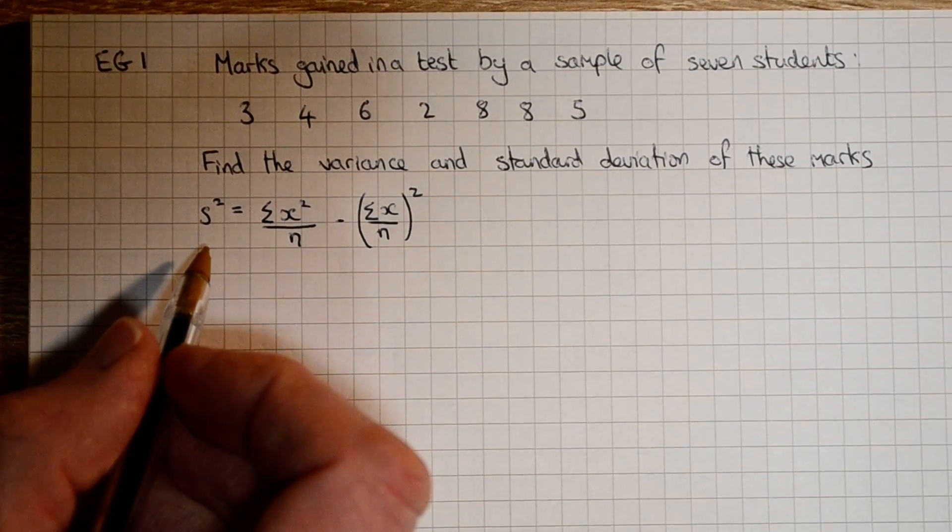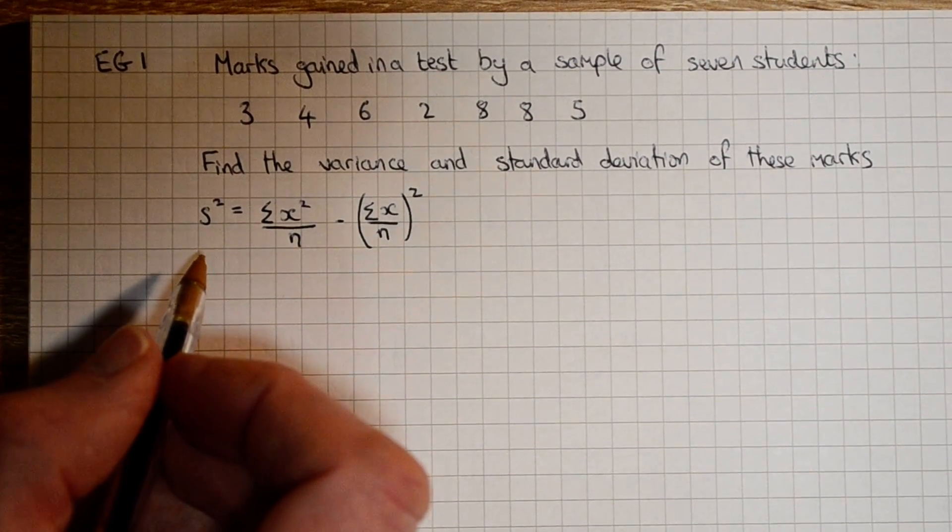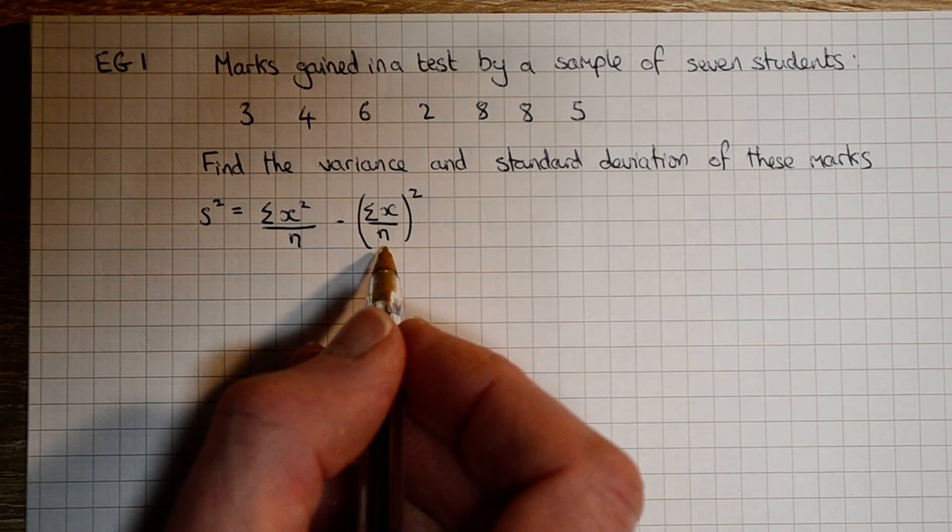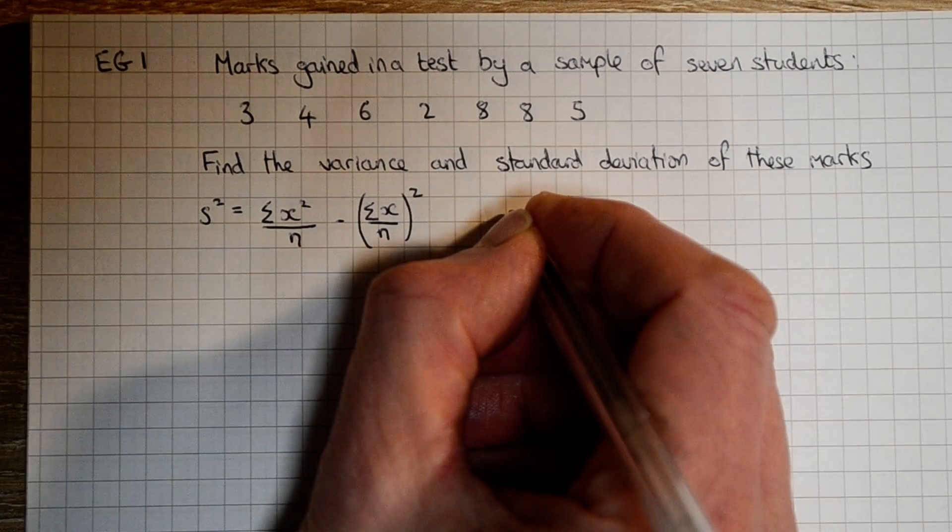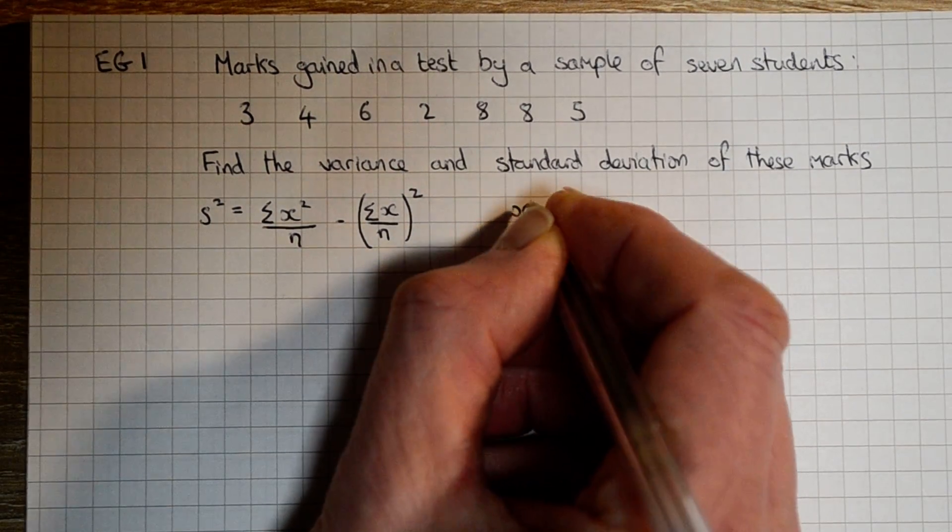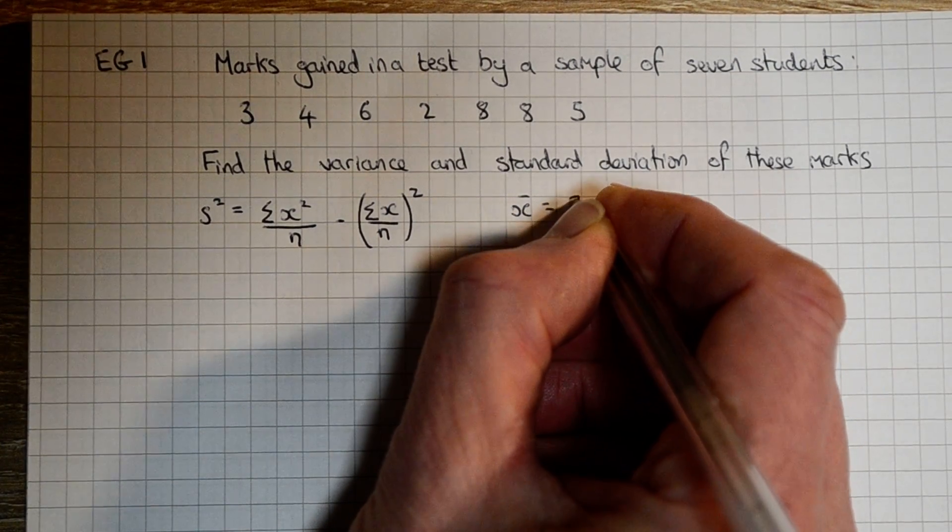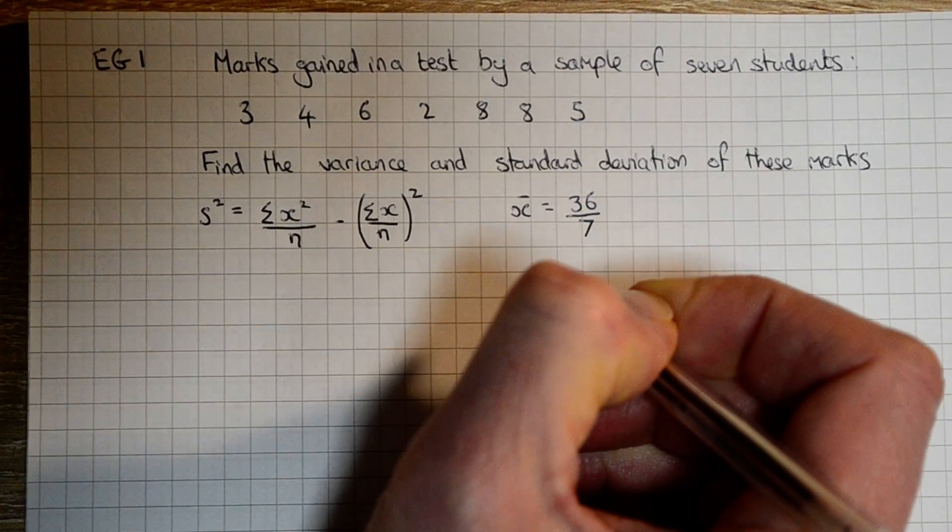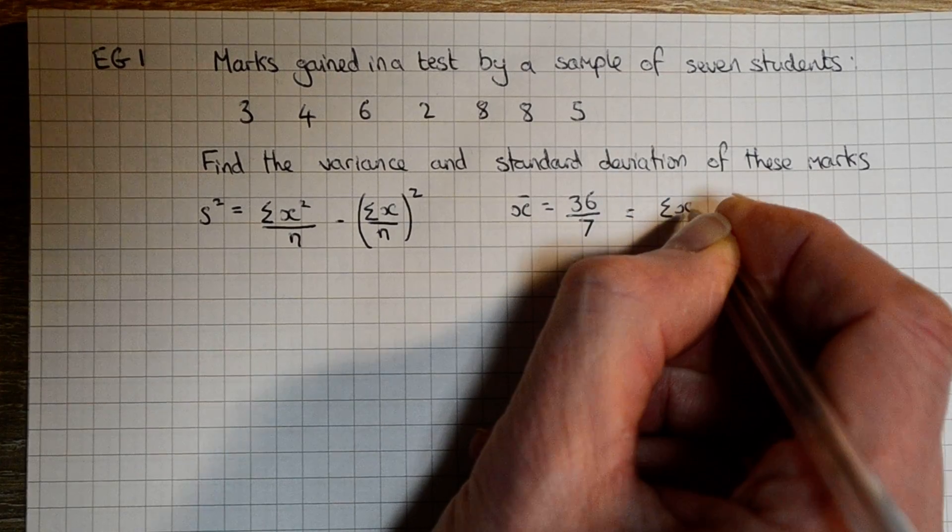Once we've found the variance we can simply square root it and find the standard deviation. First, let's find the mean value. Our mean value is x bar which equals, we find the sum is 36 and there's seven values, and that is our sum of x over n.